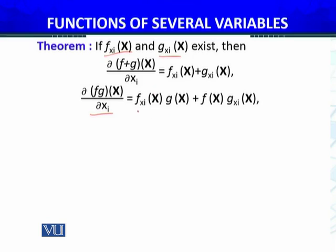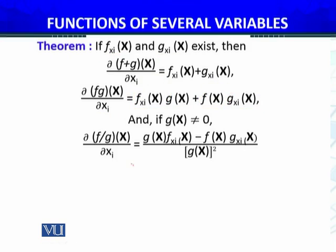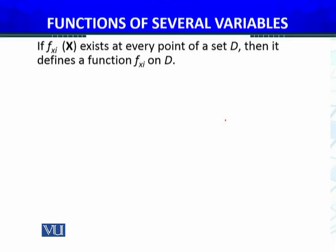If the partial derivatives of f and g both exist, then by the product rule the partial derivative of f times g is: the partial derivative of f times g as it is, plus f as it is times the partial derivative of g. For the quotient rule, with the condition that g of x is not zero, the partial derivative of f over g follows the same division rule as in one variable: denominator g squared, with g times the partial derivative of f minus f times the partial derivative of g.